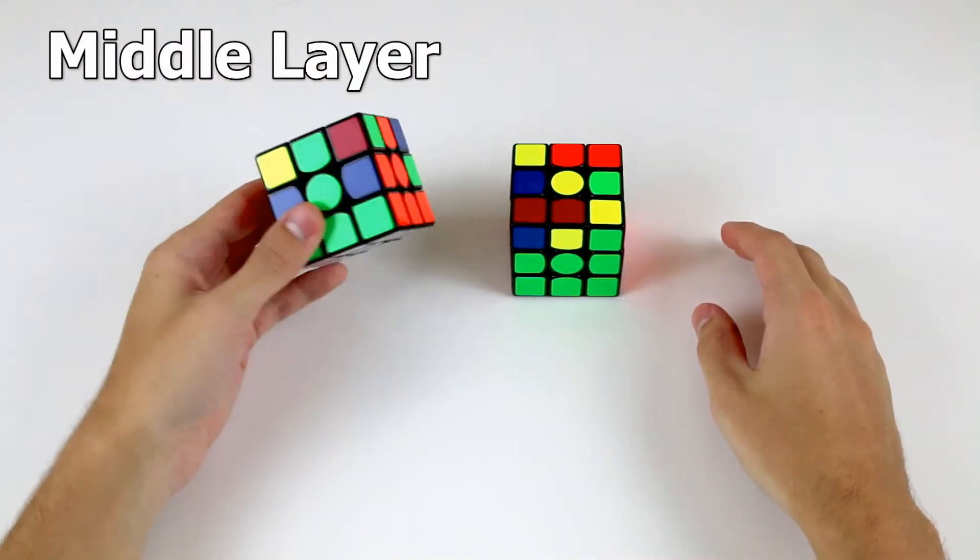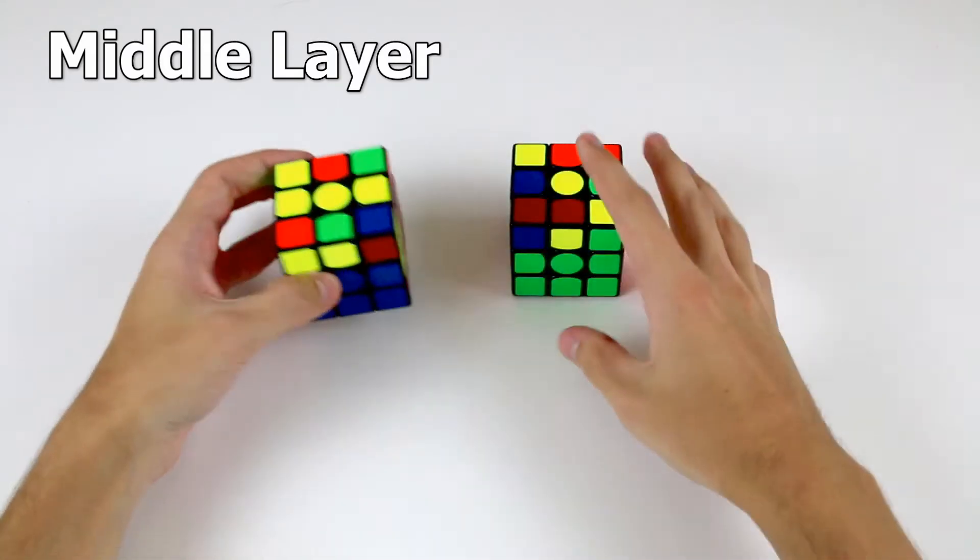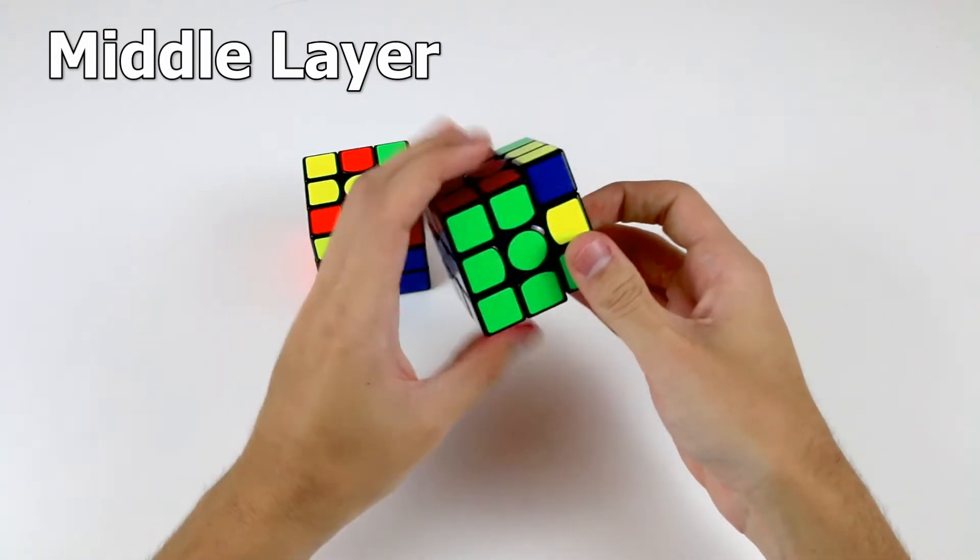Solving the middle layer, or the second layer, simply involves placing four edge pieces in their correct positions around the middle layer, so that you get the first two layers complete.